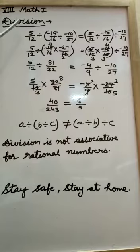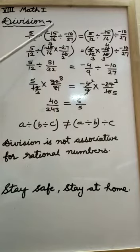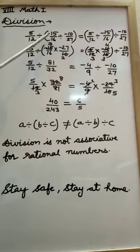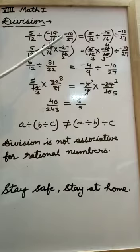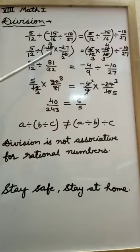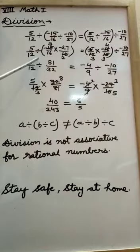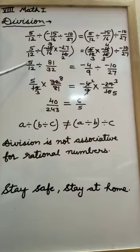You can see if we take 3 rational numbers: 5 upon 12, 15 upon 16, and 10 upon 27. We group the second and third rational numbers and solve in brackets; we get the answer 81 upon 32. This 81 upon 32, if we divide with the first rational number, 5 upon 12, we get the answer 40 upon 243.